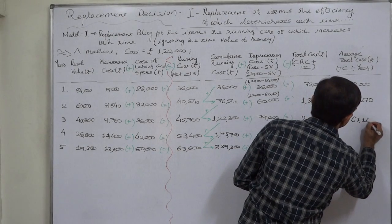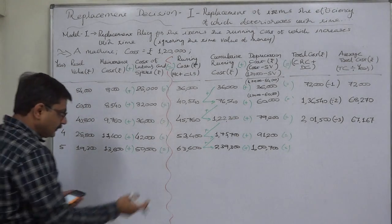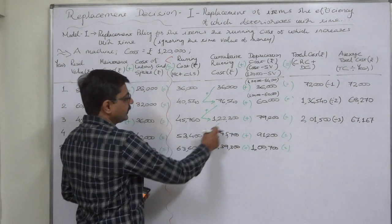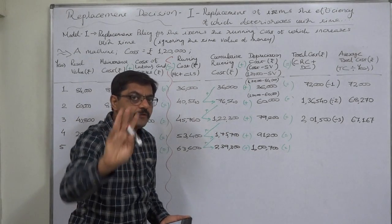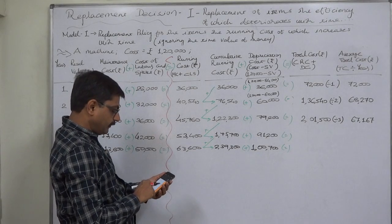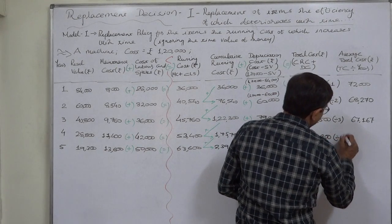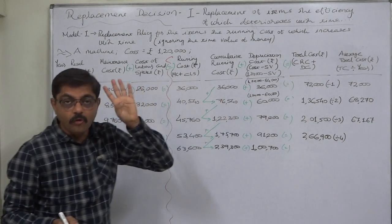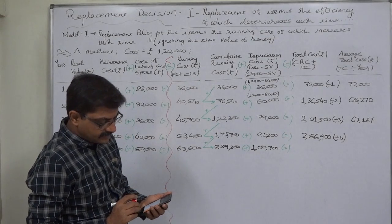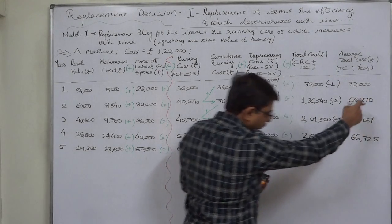For four years: the running cost in the fourth year is fifty-three thousand four hundred. Adding to the three-year total gives cumulative running cost of one lakh seventy-five thousand seven hundred. Adding depreciation of ninety-one thousand two hundred gives total cost of two lakh sixty-six thousand nine hundred. Divided by four years, the average cost is sixty-six thousand seven hundred and twenty-five. It is gradually decreasing.